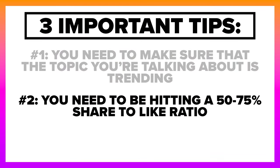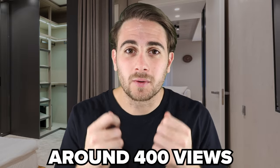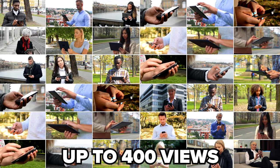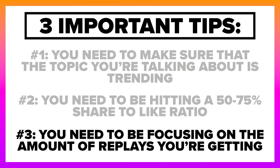The second key metric is hitting a 50 to 75 percent share-to-like ratio — so if you have 100 likes, you need 50 to 75 shares. Every share on Instagram is currently worth around 400 views, which can make your post go viral faster than the algorithm pushing it alone. The third metric is replays. You can boost replays by making a short post with lots of on-screen text, or by looping your content — take the first one to three seconds of your video and place it at the end, making viewers unknowingly re-watch and skyrocketing your replay count.